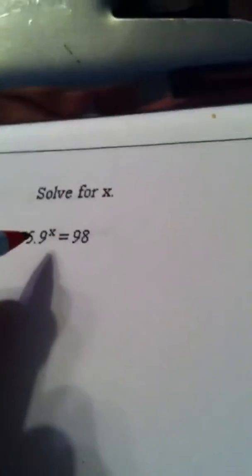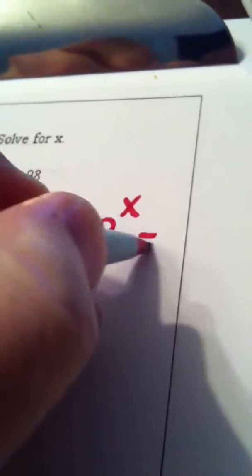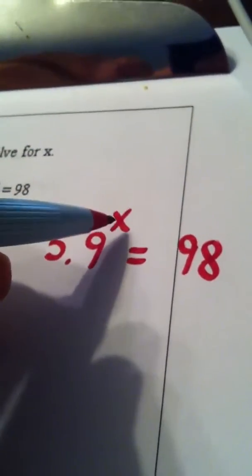Okay, let's come over here. We have 5.9 to the x power equals 98. Let me write it out a little bigger: 5.9 to the x power equals 98. Now again, this is an exponential equation. We're trying to solve for x.